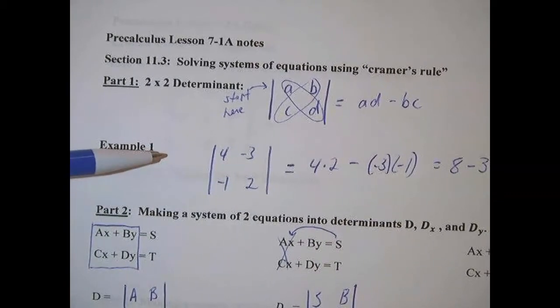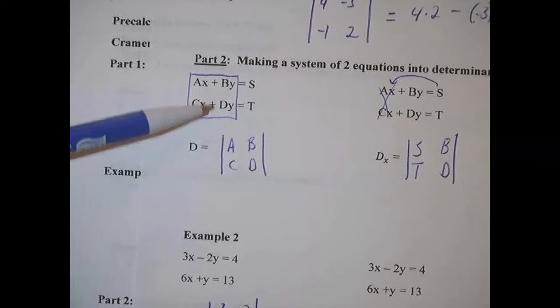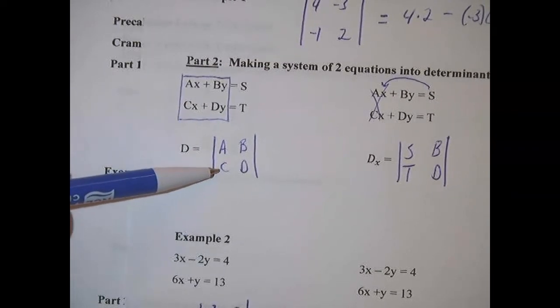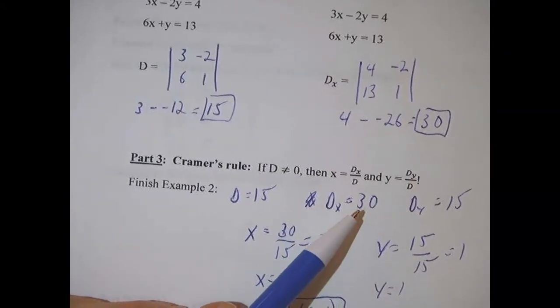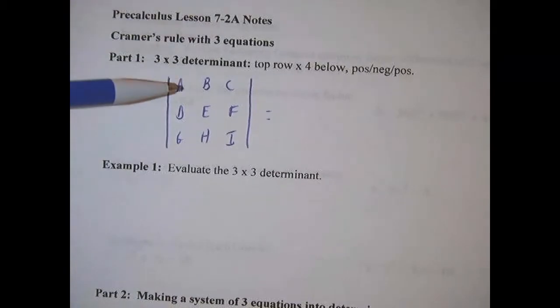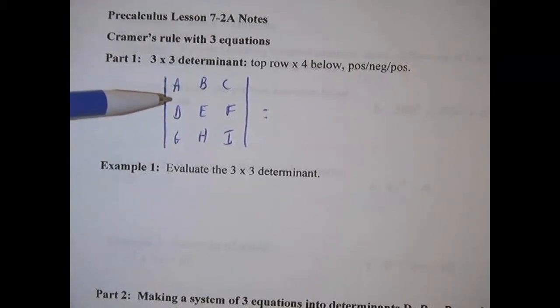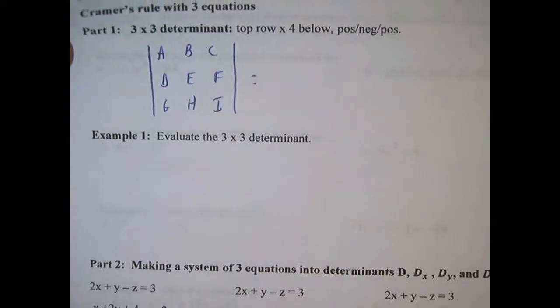We learned how to do that and we learned how to take a system of two equations and make three determinants out of them. Now let's go through what we're going to do here. We're going to do the same exact thing. We're going to learn what a 3 by 3 determinant is, do an example of solving or evaluating one.